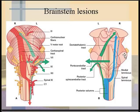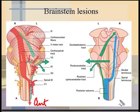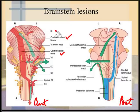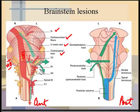Having done the brainstem, we are now going to look at the brainstem lesions. It is very important that you understand all the pathways in the brainstem before you attempt this lecture. This first image shows the anterior and posterior aspect of the brainstem and some important tracts and nerves — the corticospinal, the corticonuclear tracts, cranial nerves three, five, six, seven, eight, nine, ten, eleven, and twelve, along with spinal nerves.